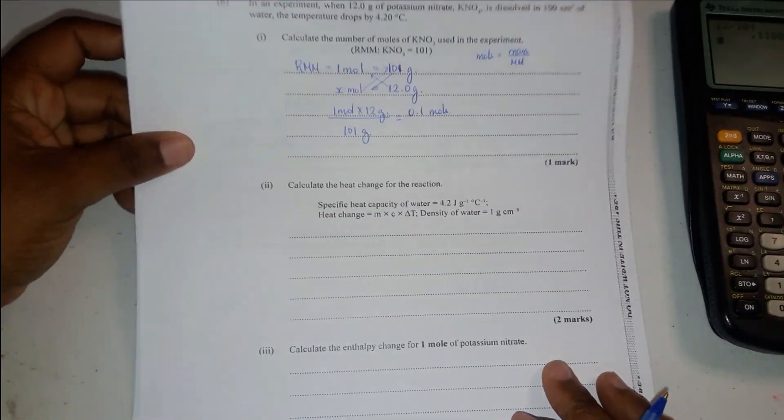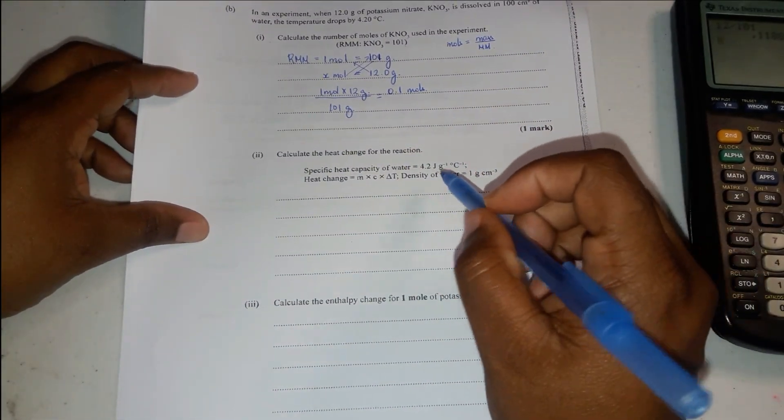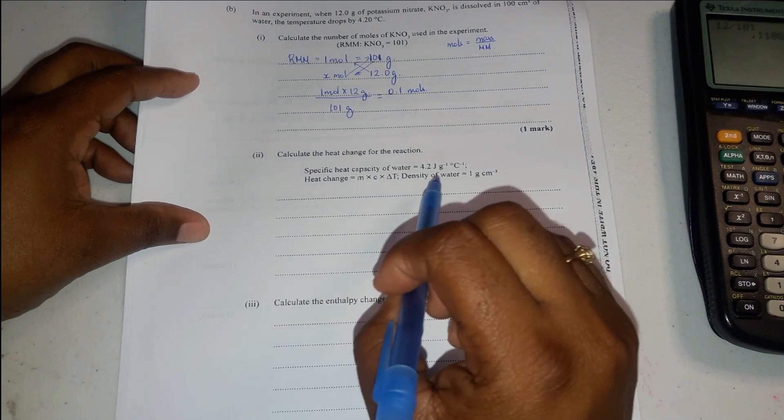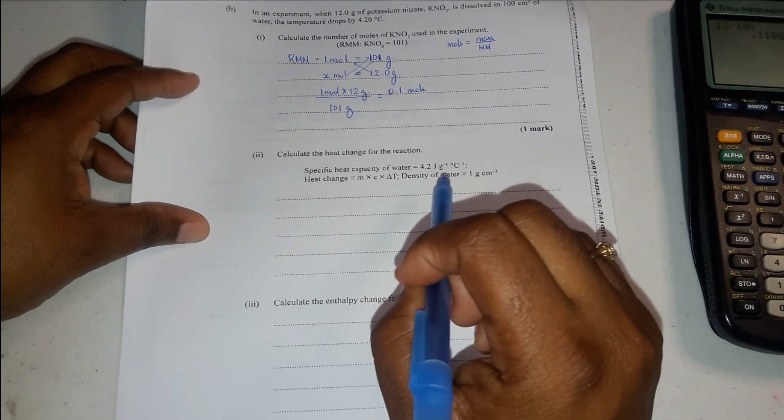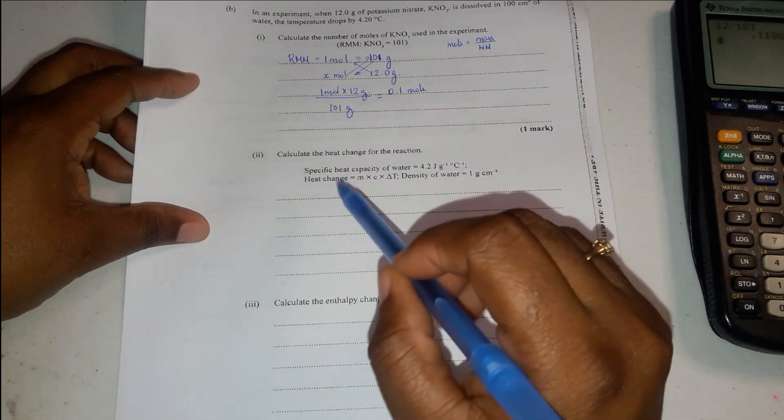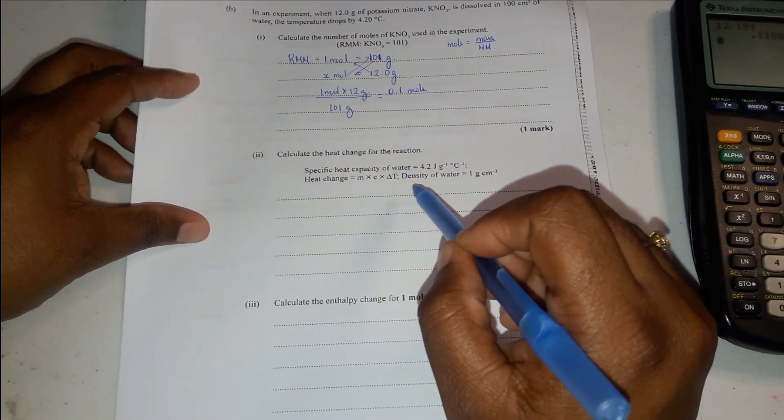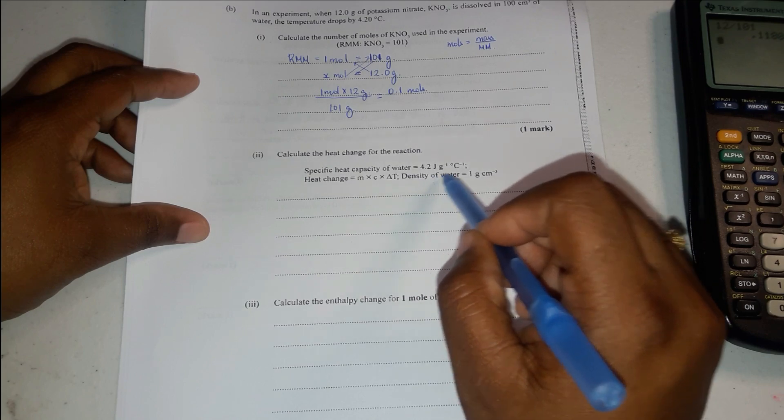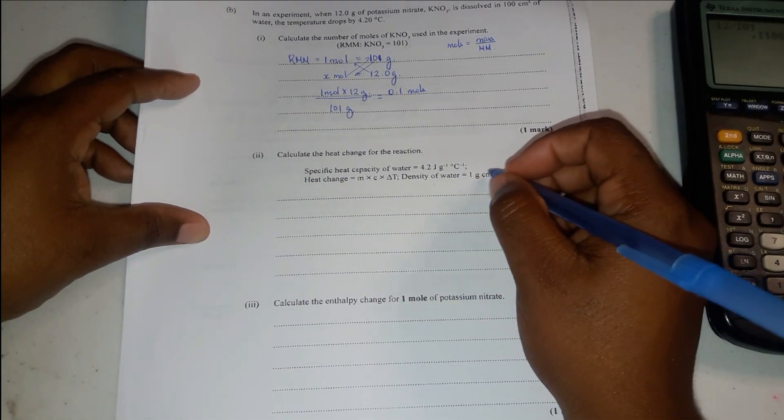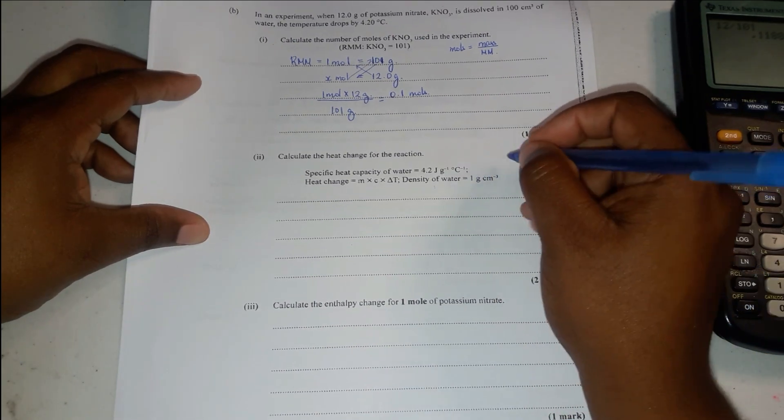Then now it says calculate the heat change for the reaction. We have specific heat capacity of water being 4.2 joules per gram degree Celsius. Heat change using this equation, we use MCAT. And we use this approximation where the density of water is equal to 1 gram per centimeter cubed.